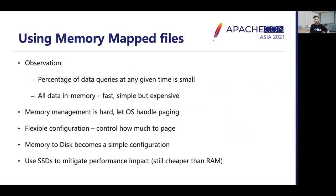We also observed that at any given time, queries only access a small percentage of the data. While keeping all data in memory is fast and simple, it is expensive. We used memory mapping and let the operating system manage our page cache. This allowed us to control costs by providing a simple memory-to-disk ratio that we could configure. We also started using SSDs to mitigate any performance impact, which was still much cheaper than keeping all data in memory.